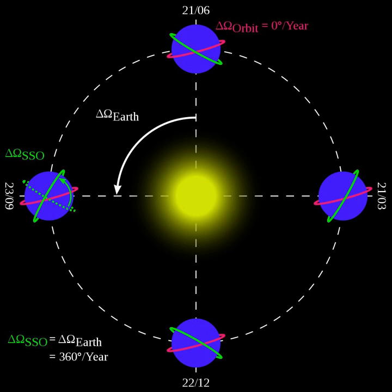A sun-synchronous orbit is achieved by having the osculating orbital plane precess approximately 1 degree eastward each day with respect to the celestial sphere to keep pace with the Earth's movement around the sun. This precession is achieved by tuning the inclination to the altitude of the orbit such that Earth's equatorial bulge, which perturbs inclined orbits, causes the orbital plane of the spacecraft to precess with the desired rate.